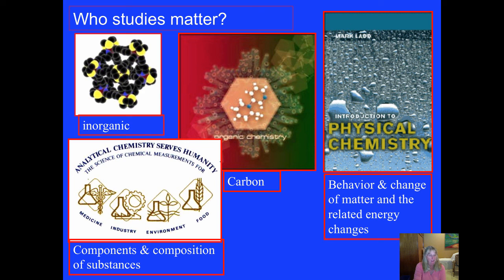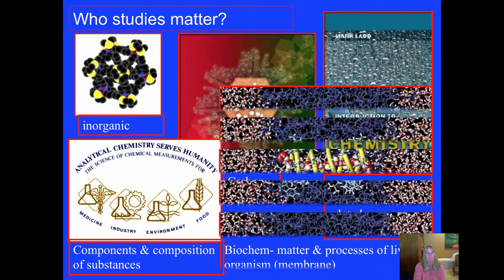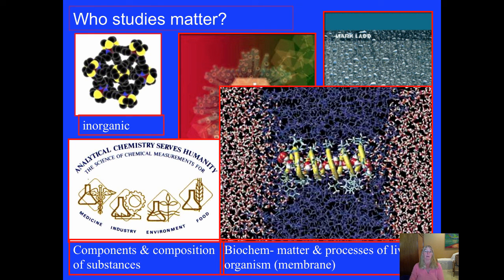If you are an analytical chemist, you study the components and composition of substances, which might cover medicine or industry or food or the environment. Another important branch, and this is where all the technological breakthroughs are taking place recently, is in biochemistry. And as the word bio indicates, that's the matter and the study of that matter and the processes it undergoes in living organisms. Sometimes organic chemistry and biochemistry overlap. So there are several branches of chemistry our focus will be on inorganic.